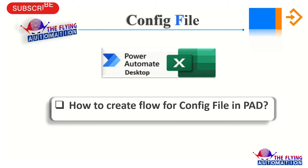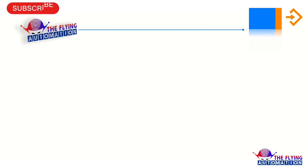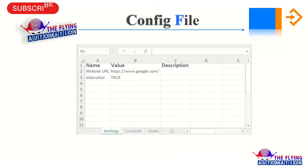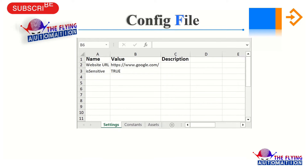Let's see first how a config file looks like. Here you can see the config file — it has three columns: name, value, and description. It also has setting, constant, and asset.